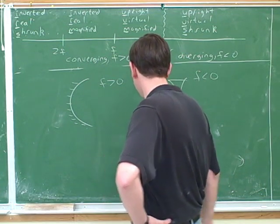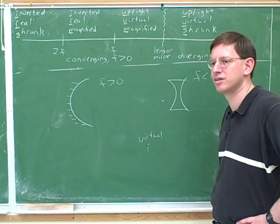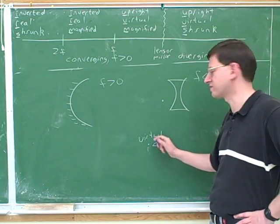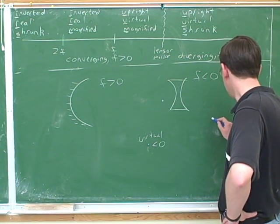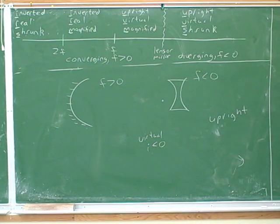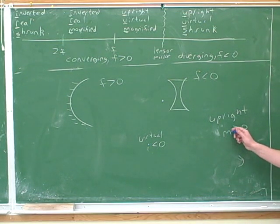So if you have a virtual image, what variable does that tell you about? i. And what does it tell you about it? That it's negative. Right. To me, that's kind of intuitive because virtual is a kind of negative sounding word. Real is more of a positive sounding word. If I tell you something is upright, what does that tell us mathematically? That the image has the same orientation as the object. And it's going to be positive. The magnification will be positive. All right. So mathematically, this would tell us we have a positive M.